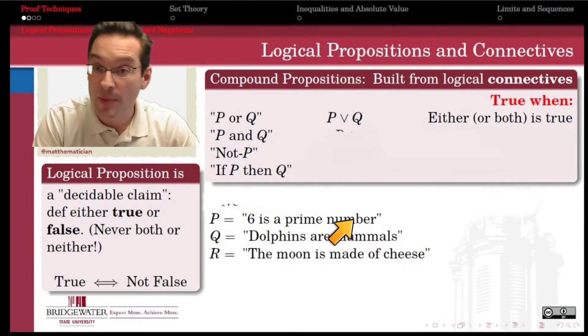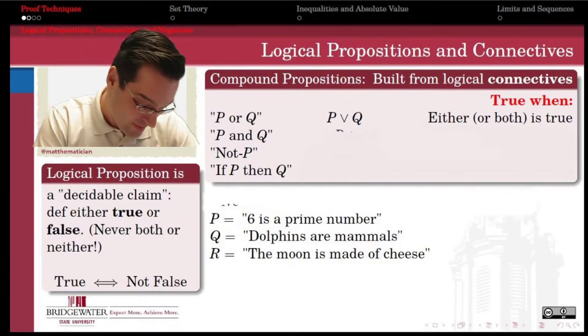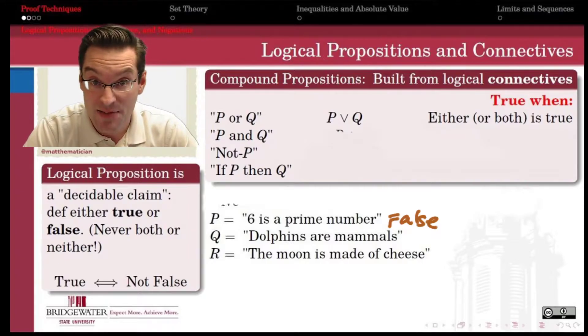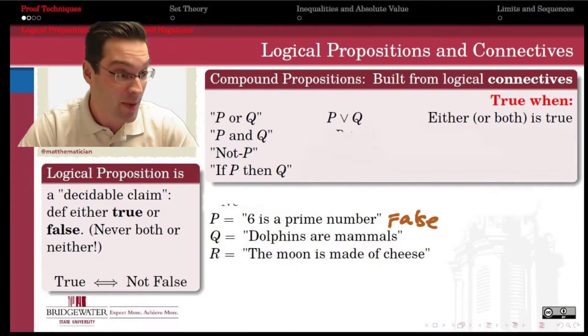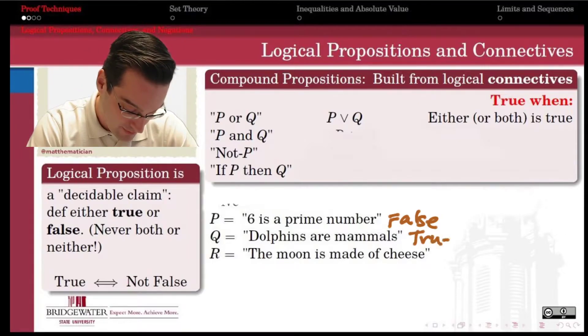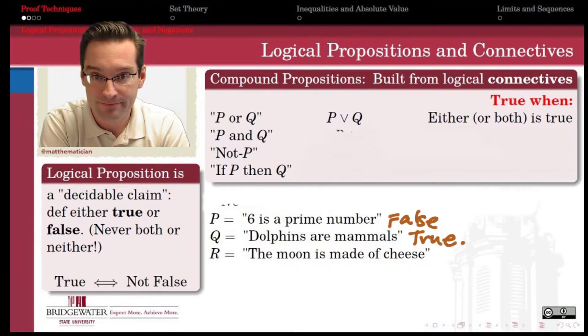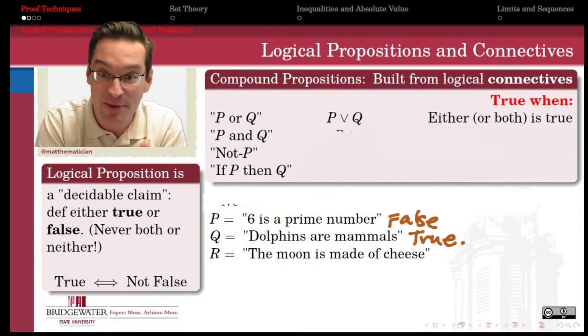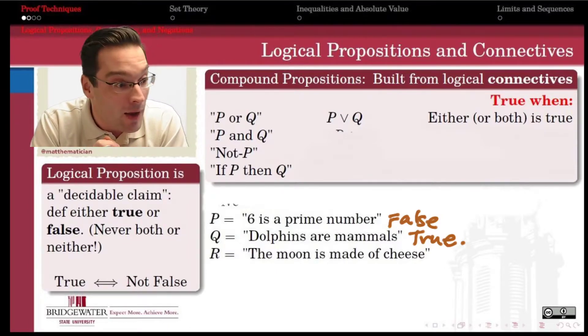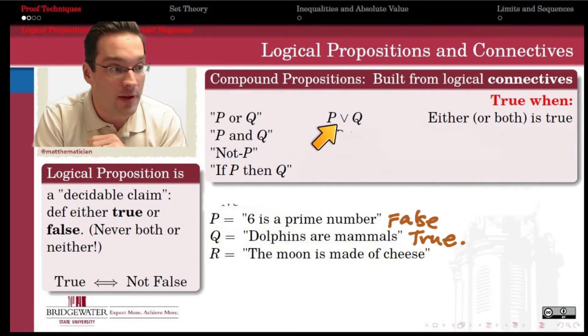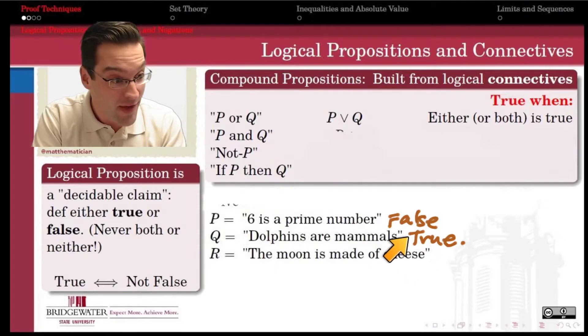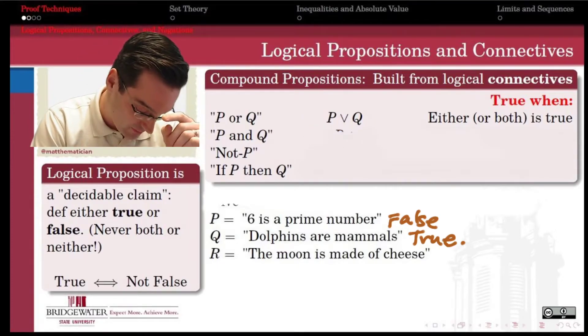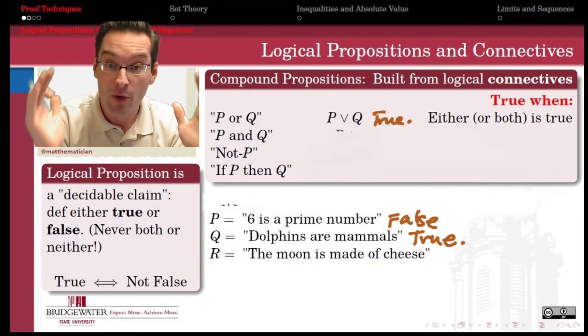In the example, 6 is a prime number or dolphins are mammals, well, the statement 6 is a prime number, I think we can agree as mathematicians is not true. But the statement dolphins are mammals, we can ask Wikipedia, Alexa, are dolphins mammals? Yes, oceanic dolphins or delphinidae are a widely distributed family of dolphins that live in the sea. 30 extant species are described. Alexa, that's enough, thank you. So we can conclude that dolphins are in fact mammals. We can say that that's a true statement. And so if I were to form the compound statement P or Q, 6 is prime or dolphins are mammals, the fact that dolphins are mammals is a true statement is sufficient to make the entire statement P or Q a true statement. As soon as one of the pieces is true, the whole disjunction becomes true.